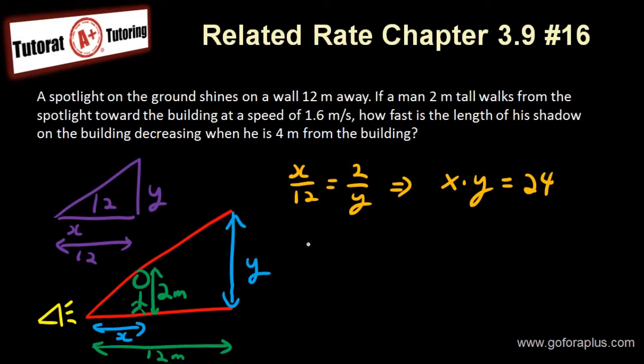Now what else do I need to know? I need to know what is dy over dt. That's basically my question here. How fast is the length of the shadow decreasing. So that's basically my question. Now what do they give you? They give me dx over dt as 1.6 meter per second.